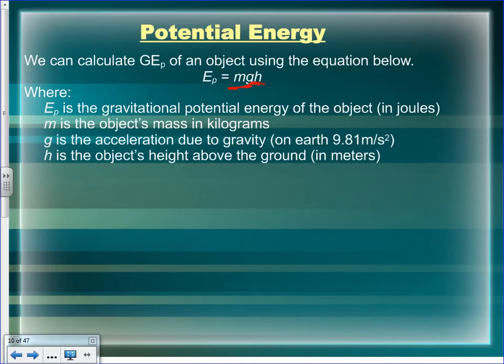In chemistry, mass was always in grams. In physics, mass is always in kilograms — something to remember on your final exam. The way to remember it: in physics, we do things big. Chemistry deals with atoms, which are small, so grams are used there.